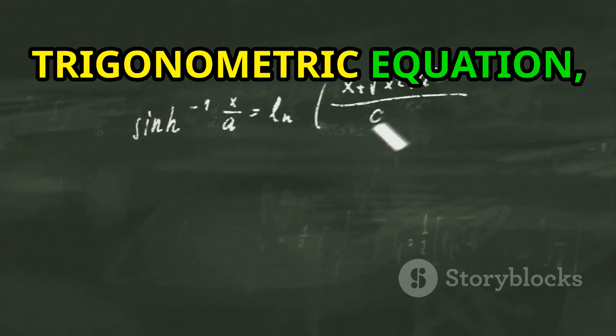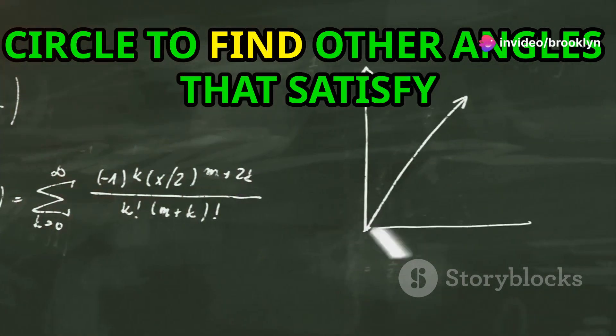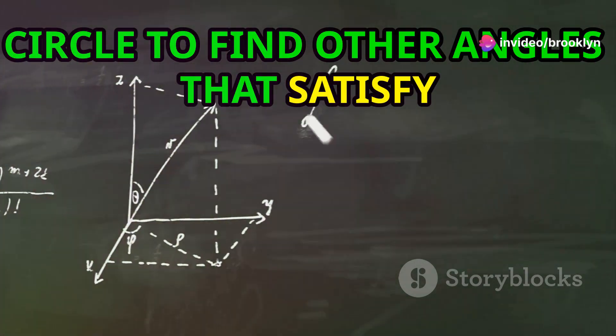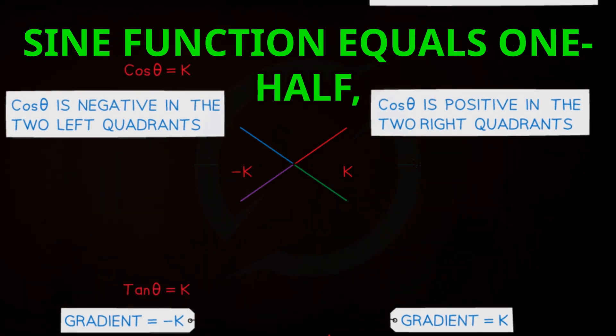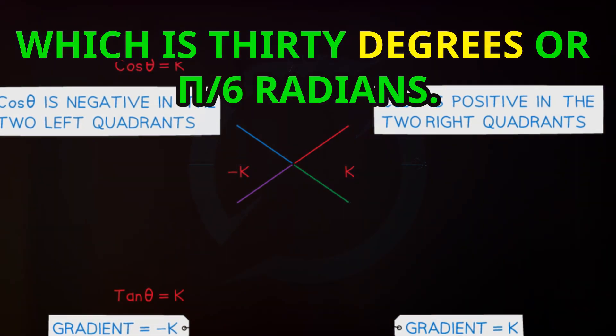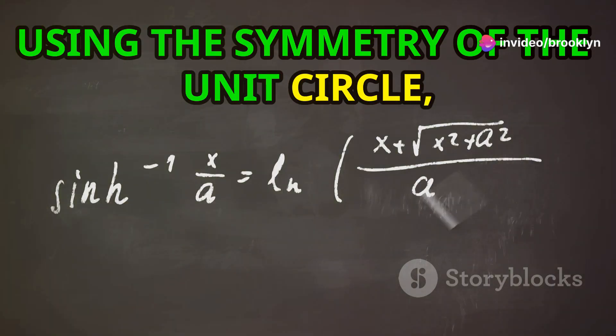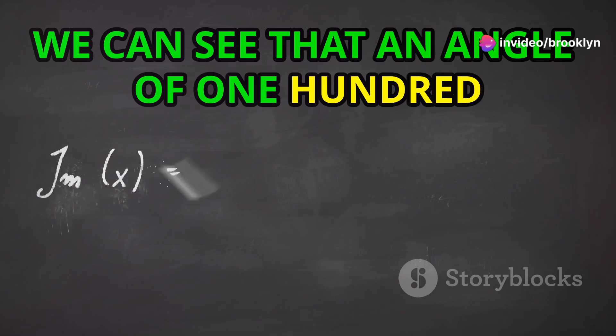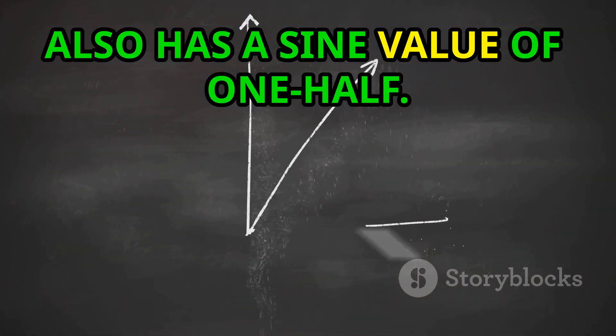If we know one solution to a trigonometric equation, we can use the symmetry of the unit circle to find other angles that satisfy the equation. For example, if we are looking for angles where the sine function equals one-half, we can start by finding the primary solution, which is 30 degrees or π/6 radians. Using the symmetry of the unit circle, we can see that an angle of 150 degrees or 5π/6 radians also has a sine value of one-half.